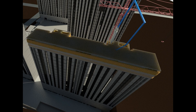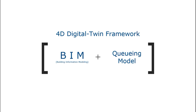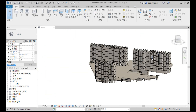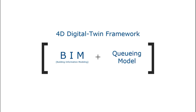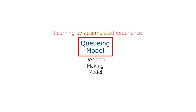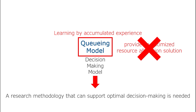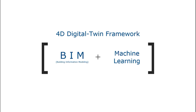We proposed a 4D digital twin framework to manage the apartment construction process. It is important to have both a model for 3D shape and a model that supports decision making. BIM was proven sufficient to provide construction information, having evolved to a level that can adequately serve this role. The queuing models that support decision making help to quantitatively analyze the state of the system based on empirical knowledge inputs. However, the framework cannot yet provide optimized resource allocation because it relies on accumulated experience. Therefore, in future research, combining emerging machine learning technology with BIM could realize a better 4D digital twin.